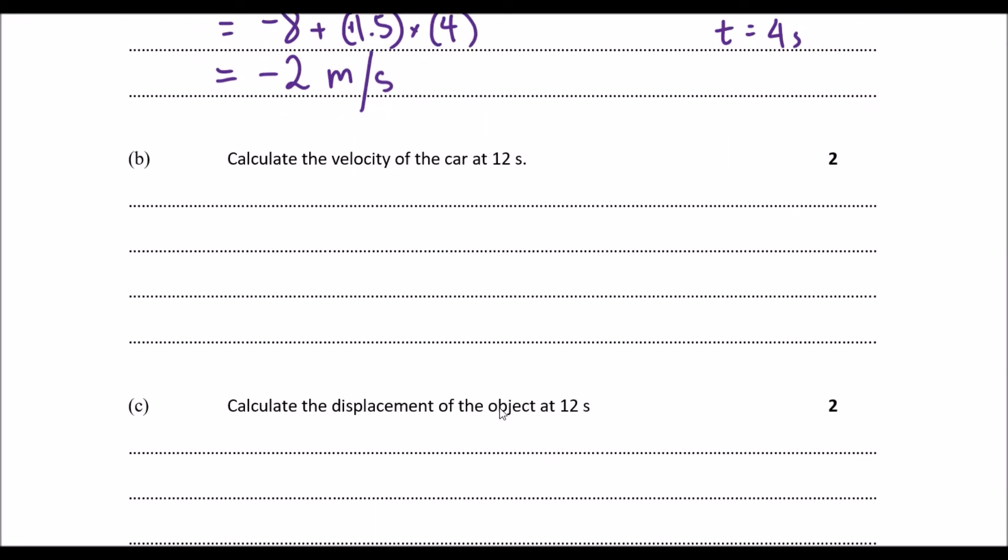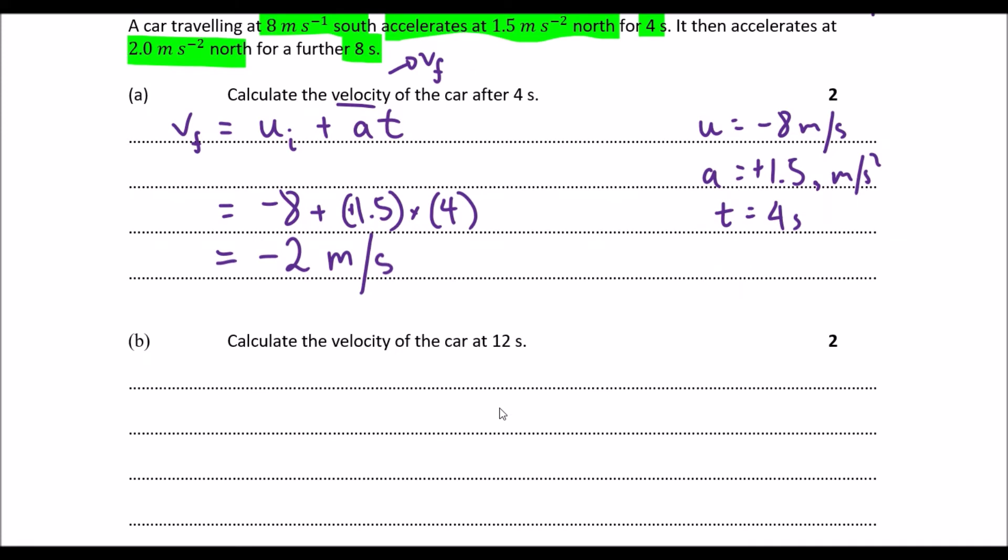Next one, it says calculate the velocity of the car at 12 seconds. So here we're trying to calculate again the final velocity at 12 seconds. Now this one is a little bit misleading because what you can actually see here is we undergo two accelerations. The formula that we have over here, this a represents a constant acceleration, as in the acceleration stays the same during that time period.